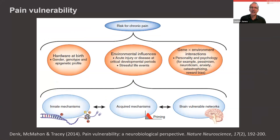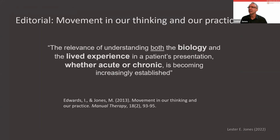One group has described a concept called pain vulnerability: across the lifespan, things happen to the nervous system that enable it to be more reactive to a stress response — the system becomes primed, with evidence that microglia are involved in this priming. As we draw closer to the pain and movement reasoning model, this suggests we need to pay attention not just to biology, but to the lived experience of the person — not just with chronic pain, but with acute pain as well.